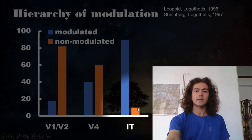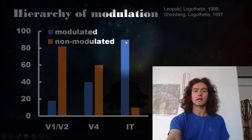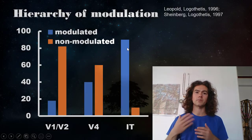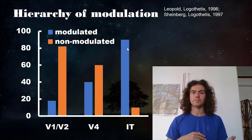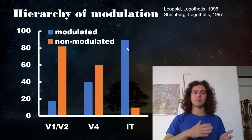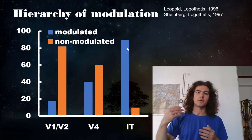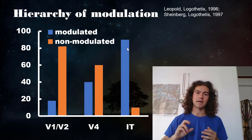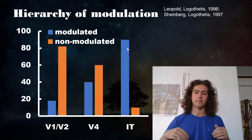But then, once they moved all the way up to IT, they found a very different story. Here, about 90% of the cells were modulated by the monkey's conscious perception, where only 10% were non-modulated. So it seems like there's some kind of a hierarchy of modulation, where the further you get in the processing stream, the higher the percentage of cells that are being modulated by consciousness, as opposed to being modulated by the incoming stimulus that is actually hitting the retina.